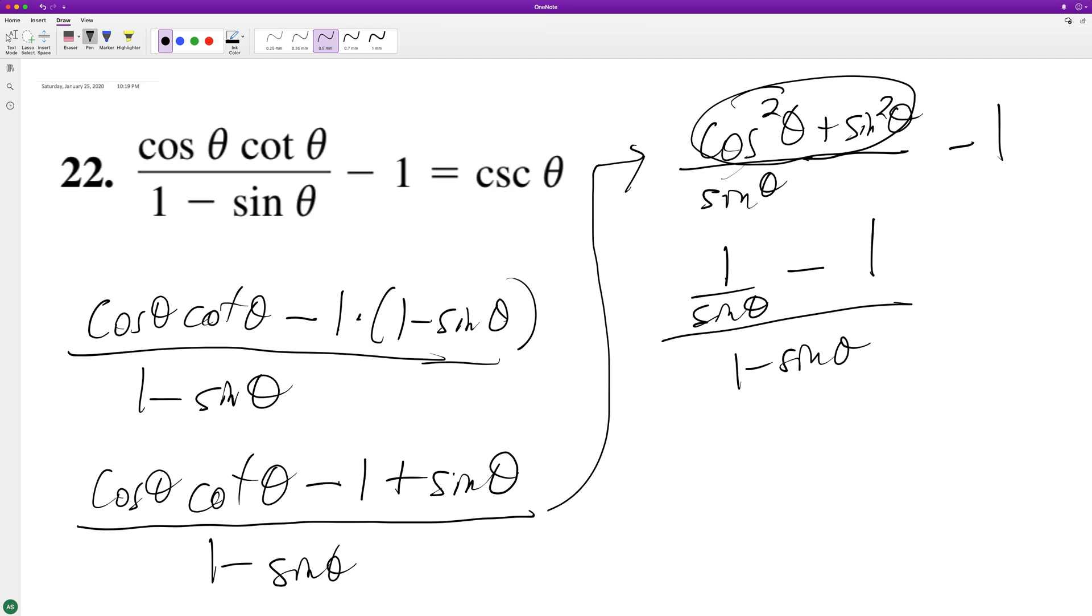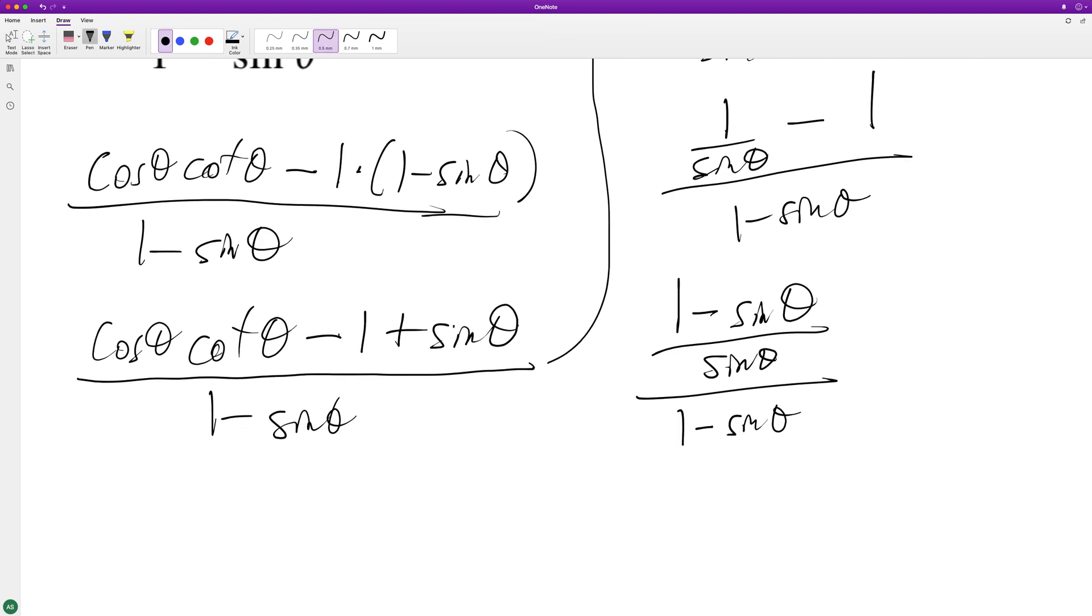On the top sine theta, so we get one minus sine theta over sine theta, and on the bottom we have one minus sine theta. So we essentially end up with one minus sine theta over sine theta.